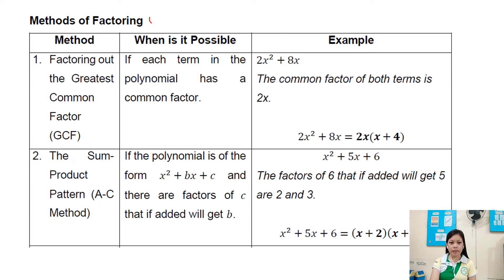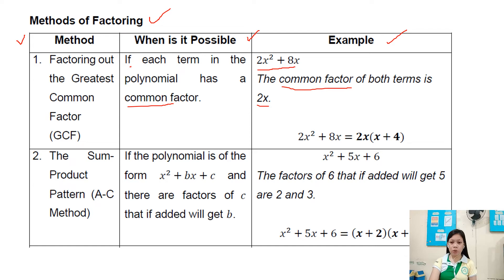Now we have the methods of factoring. Method 1: factoring out the greatest common factor. This is possible when each term in the polynomial has a common factor. For example, 2x squared plus 8x — there is a common factor of 2x for both terms, since 2x squared is divisible by 2x and 8x is divisible by 2x.